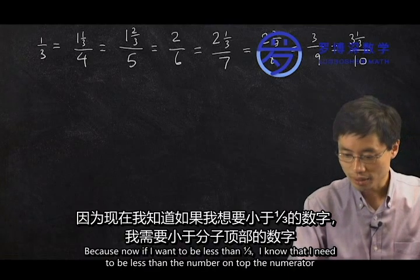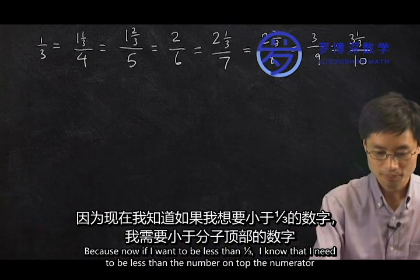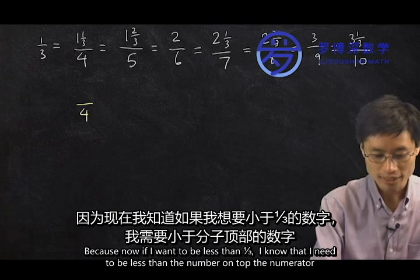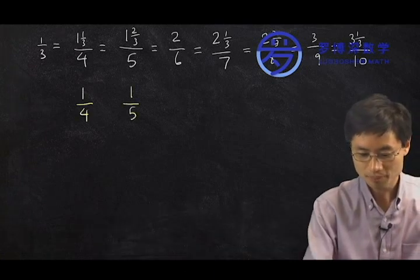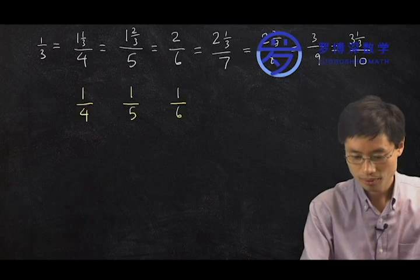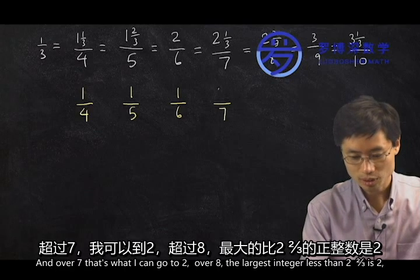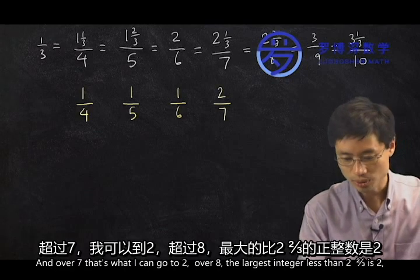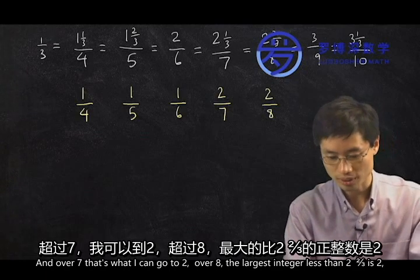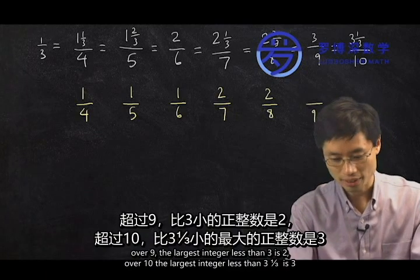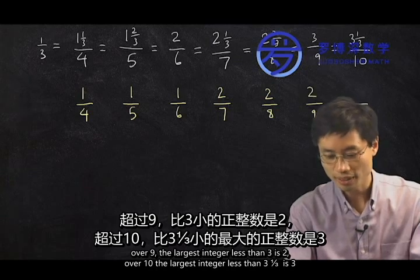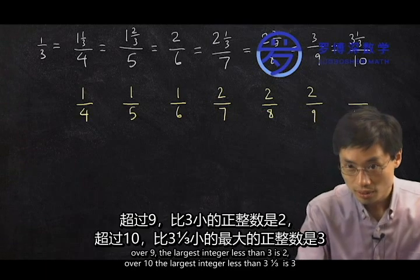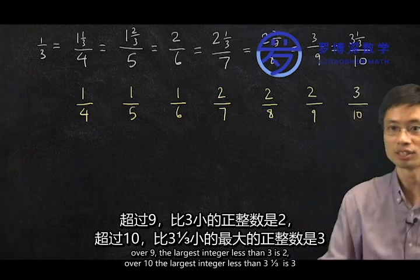Because now, if I want to be less than one-third, I know that I need to be less than the number on top — the numerator. Over seven, I can go to two. Over eight, the largest integer less than two and two-thirds is two. Over nine, the largest integer less than three is two. Over ten, the largest integer less than three and one-third is three.